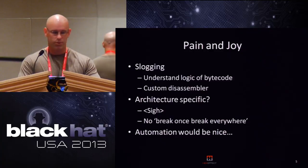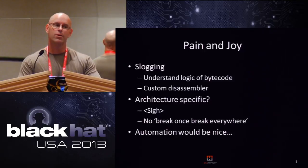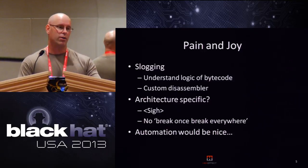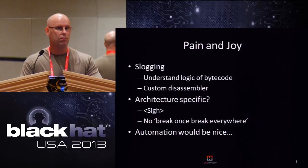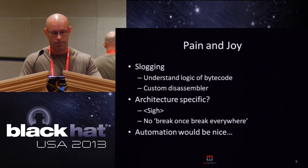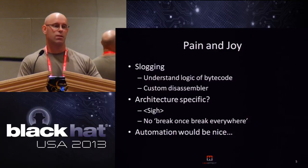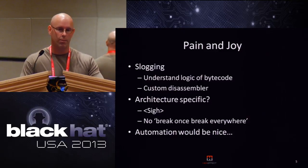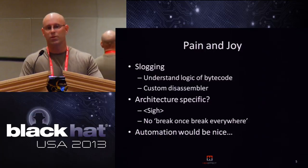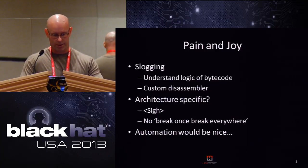How I've done it in the past is essentially slogged through it — start reverse engineering, pull up dynamic and static, find the byte code. Once you find the byte code, start reversing the VM so you can create your own little disassembler, which is fairly fast but could take a while depending on how complex the VM is. What I found out is that the disassembler I created for one particular protection didn't work on the next one, because the VM is jittered each and every time. So 'break once, break everywhere' doesn't work, and I started thinking some sort of automation technique would be nice.